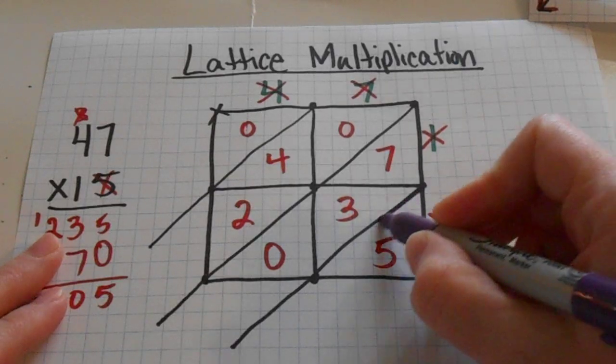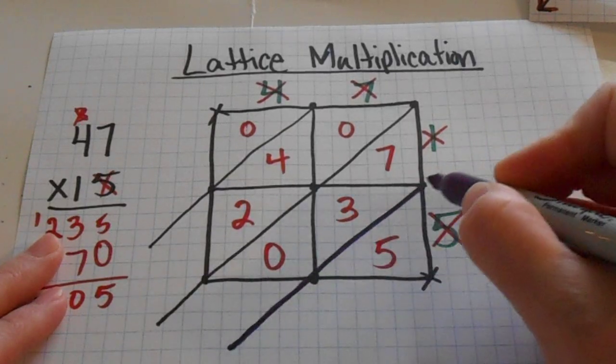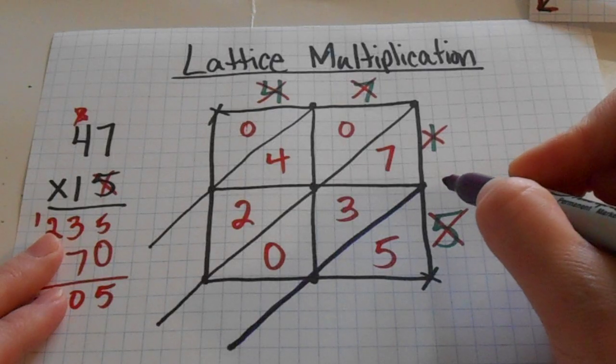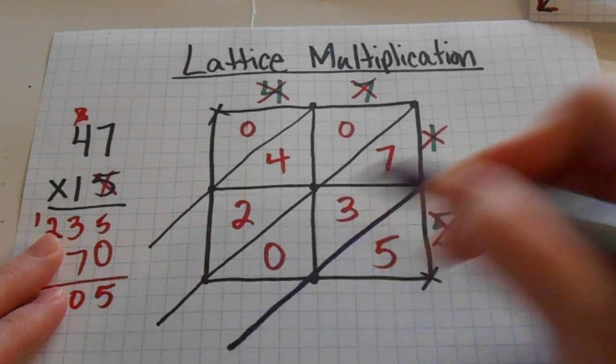We're going to start on the right hand side just like we normally would when we're adding. We're going to start here and I'm just going to follow this line. I call this sliding down the mountain. That sometimes helps people to remember how to add up the numbers.